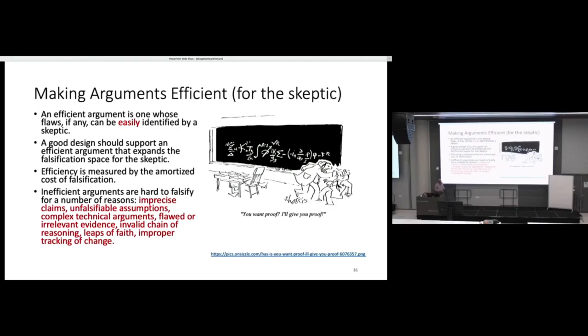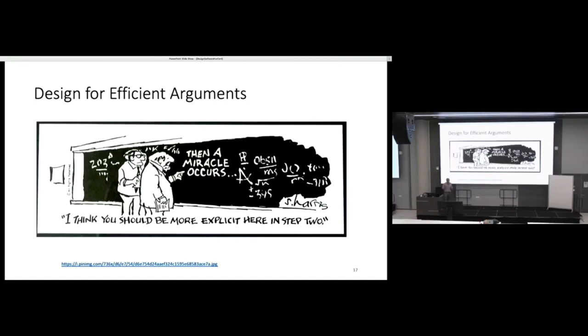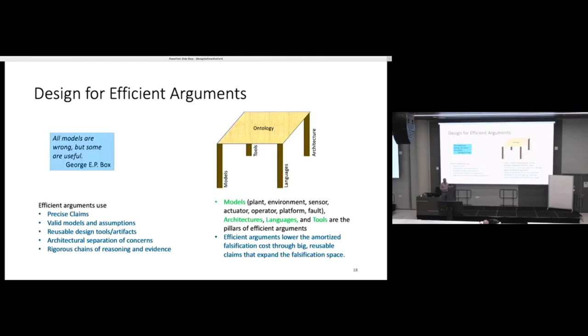You end up with this lower amortized cost, even though proving type system sound might be extra work. It may not be relevant to the particular program you're writing. It's still worth it because it reduces the amortized cost. On the other hand, an inefficient argument would be one where you see claims that are not verifiable. It says things like this software is good. How we used Agile, for instance. That has no bearing on any of these things. It's an imprecise claim. Unfalsifiable assumptions, complex chains of reasoning, all of these things make the arguments inefficient.